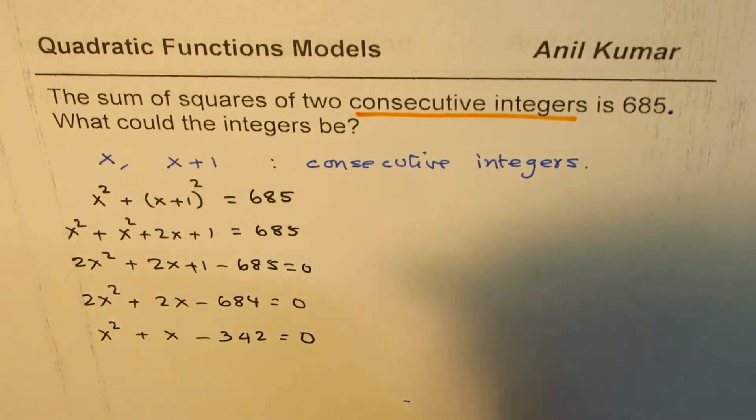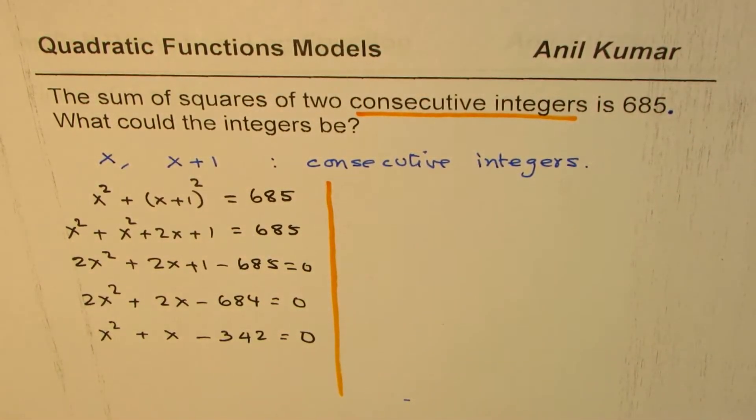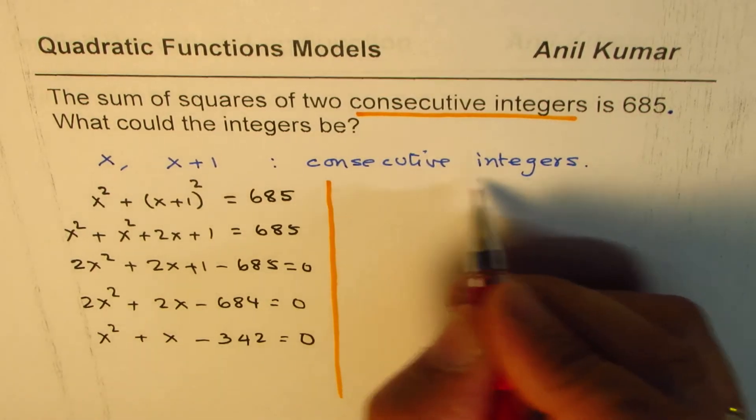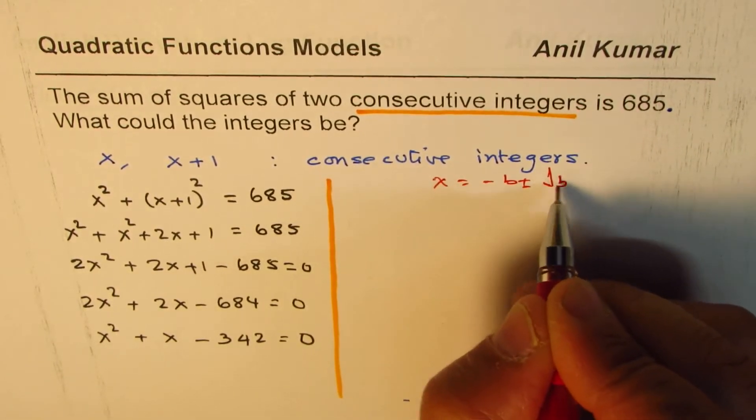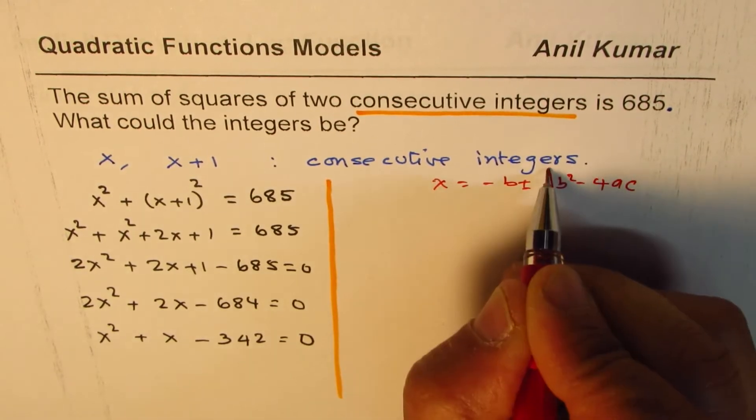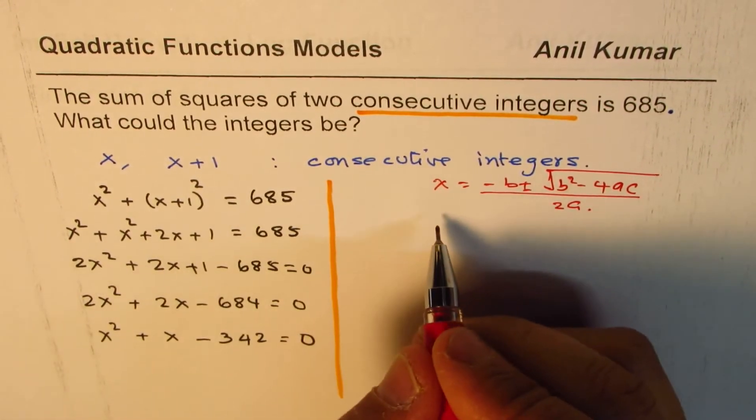Now at this stage you could use a product and sum method, or you could use quadratic formula. Factor and solve or use quadratic formula. So the quadratic formula will be of this form: x equals to minus b plus minus square root of b squared minus 4ac divided by 2a.